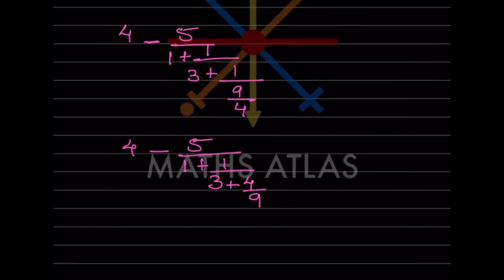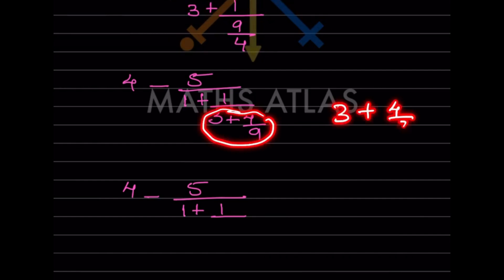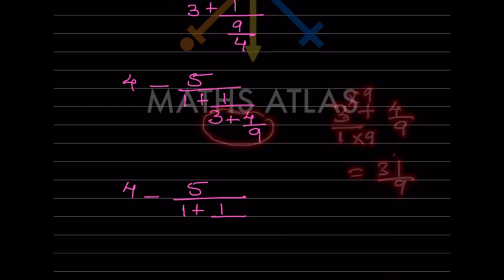Again we look at this part — the rest stays the same. We write 1 plus, which is the same, then 1 divided by... and we see 3 plus 4/9. Taking LCM 9: 9 times 3 is 27, plus 4 is 31, so this becomes 31/9. We write 31/9.